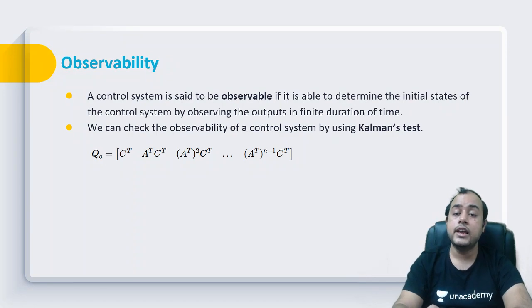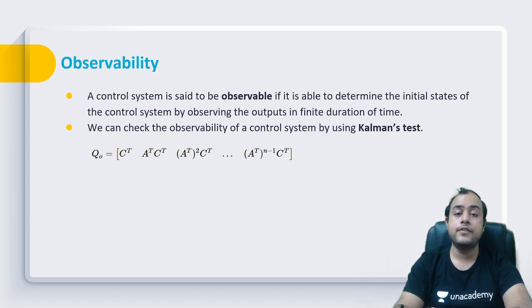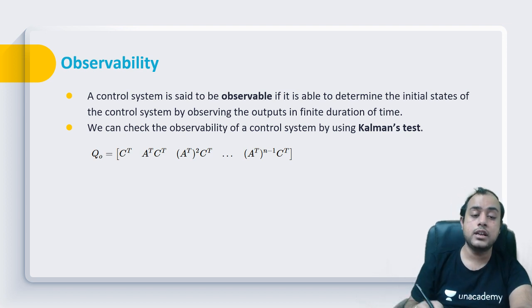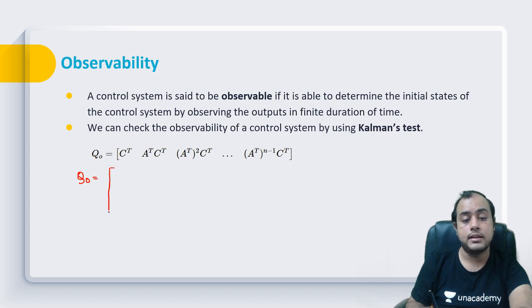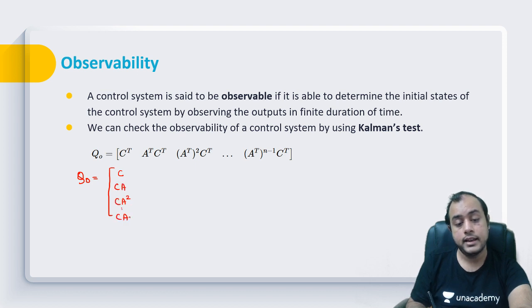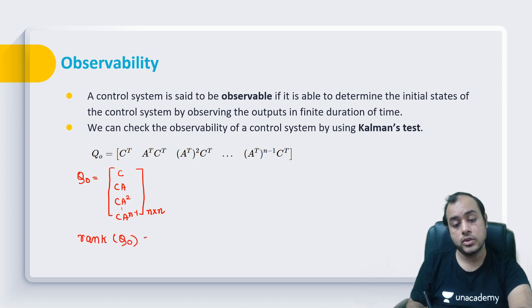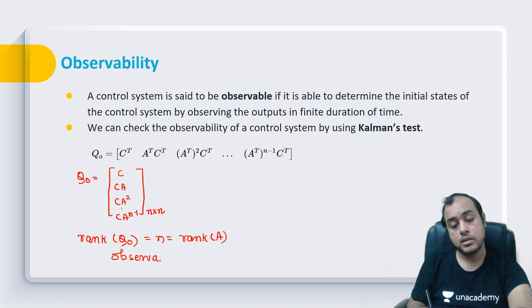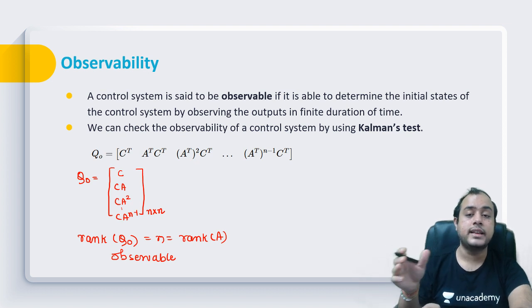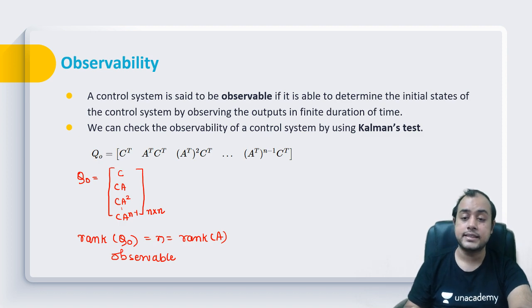Now what is observability? If you can check the state of the system just by looking at the output, the system is said to be observable. For this we form an observability matrix by arranging the matrices vertically: [C; CA; CA²; ..., CA^(n-1)]. Its order is n×n. If the rank of Q₀ equals n (or rank of A), the system is said to be observable. This test is also regarded as Kalman's test.